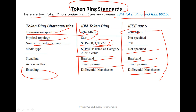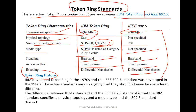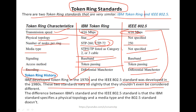Looking at the history, IBM developed Token Ring in the 1970s and IEEE 802.5 was developed in the 1980s, making IBM's standard older. These two standards vary so slightly that they shouldn't even be considered different. The main difference between IBM and IEEE 802.5 is that the IBM standard specifies a physical topology and media type, while the 802.5 standard does not.